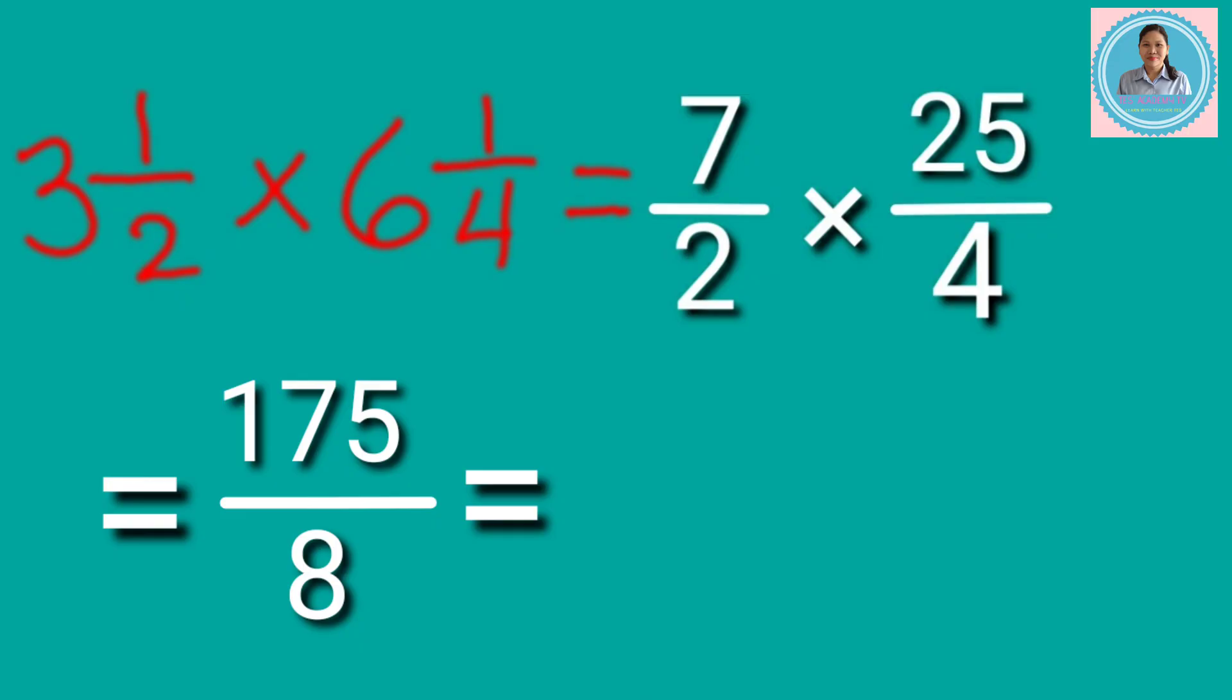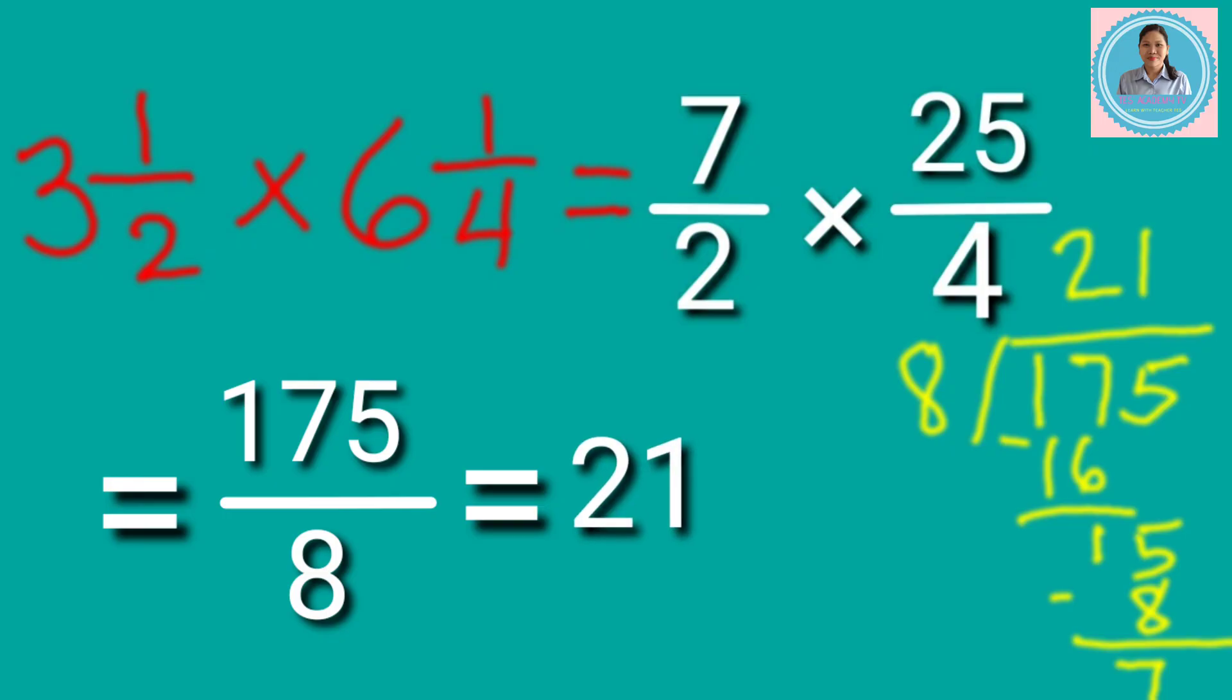It is improper fraction, so we need to simplify it by dividing the numerator by the denominator. If we divide 175 divided by 8, the answer is 21. So, it is the whole number.